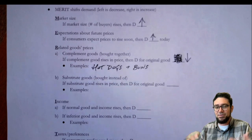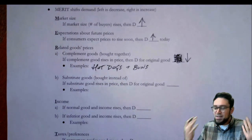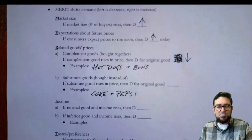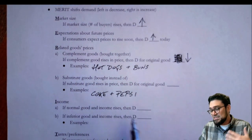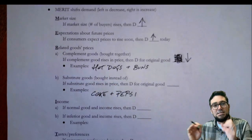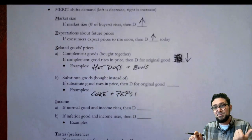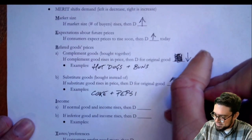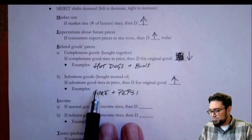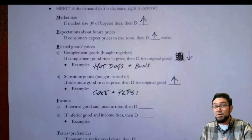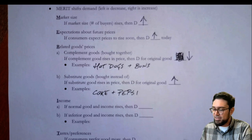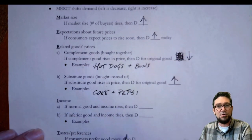Substitute goods are a little different — they're goods bought instead of each other. A classic example is Coke and Pepsi. If the price of Pepsi doubles, people will say, 'Pepsi's really expensive, I want Coca-Cola.' People shift their purchases away from the higher-priced Pepsi, and the demand for Coca-Cola will rise. Conversely, if the substitute good falls in price and goes on sale, people will quantity-demand more of that, and demand less of the original good. It's useful to keep a clear example in your head to refer back to.